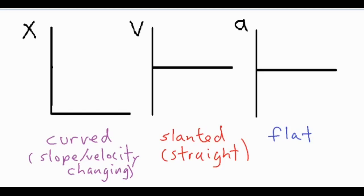We have two main types of graphs going in the positive direction: one that is speeding up and one that is slowing down. To distinguish the difference — anything that's speeding up is going to have a slope that gets progressively steeper or more vertical, and then for something that's slowing down you have something that gets progressively more flat.